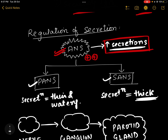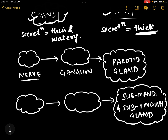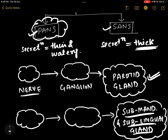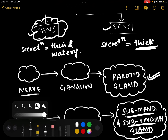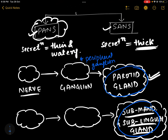For the secretion of saliva, parasympathetic impulses must reach these glands. The nerve first reaches a peripheral parasympathetic ganglion, and then branches from that ganglion supply the gland, resulting in secretion of saliva.